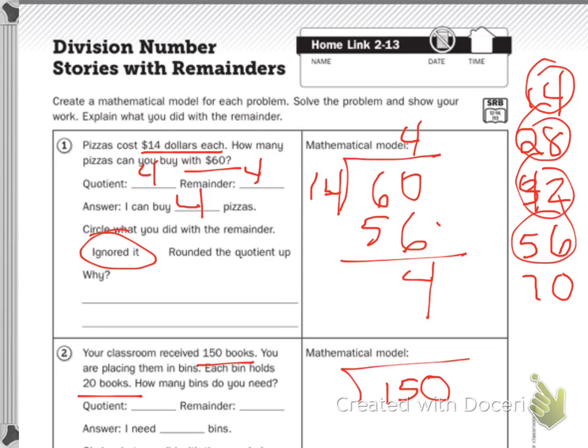So I will give you that. You need to solve giving me the quotient and the remainder, and how many bins you need and whether you rounded the quotient up or ignored it and why. Let me pull up your practice at the bottom.